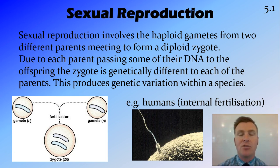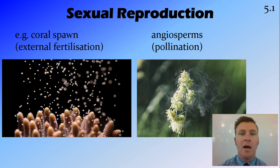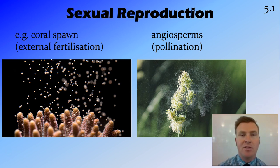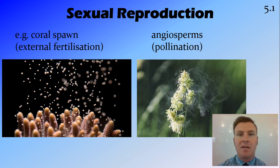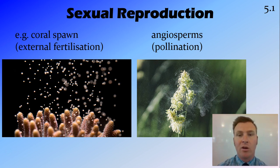Sexual reproduction also includes external fertilization, such as coral spawn, where the male coral releases sperm and the female coral releases eggs into the water, and the sperm and eggs meet each other in the water. External fertilization usually requires an aquatic environment for this to occur.